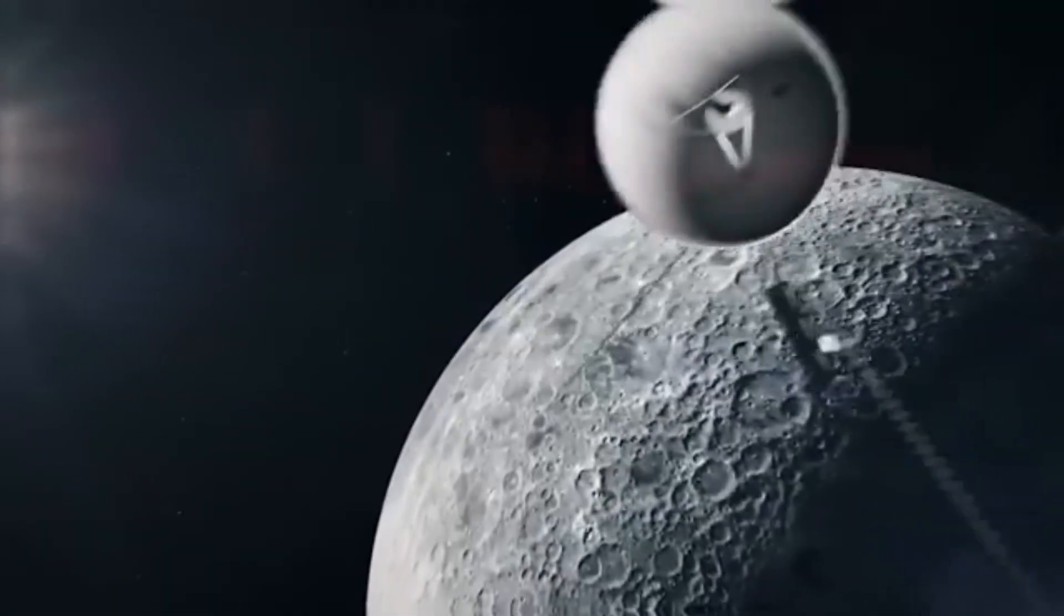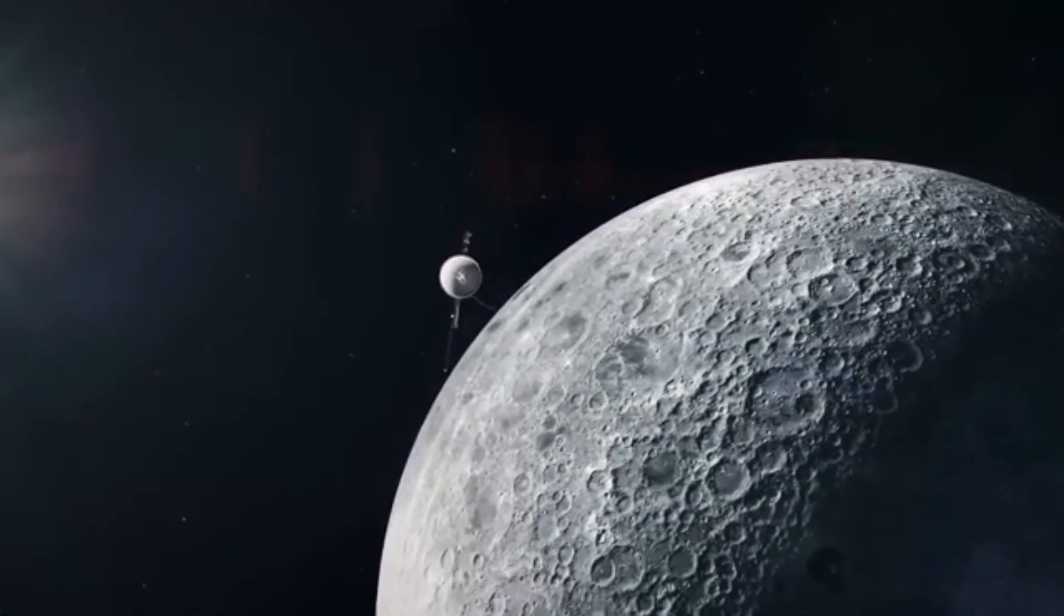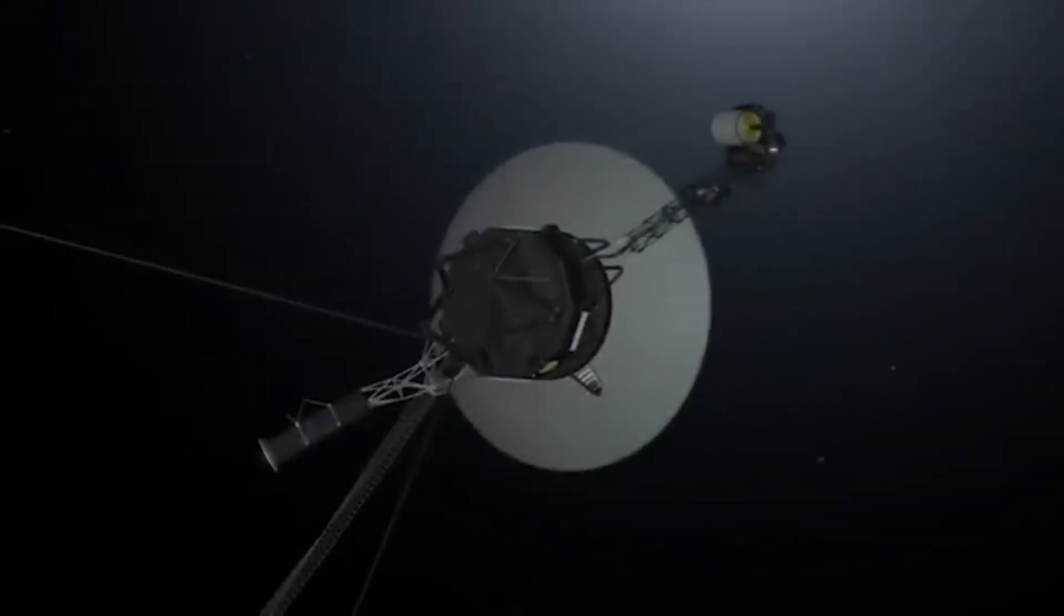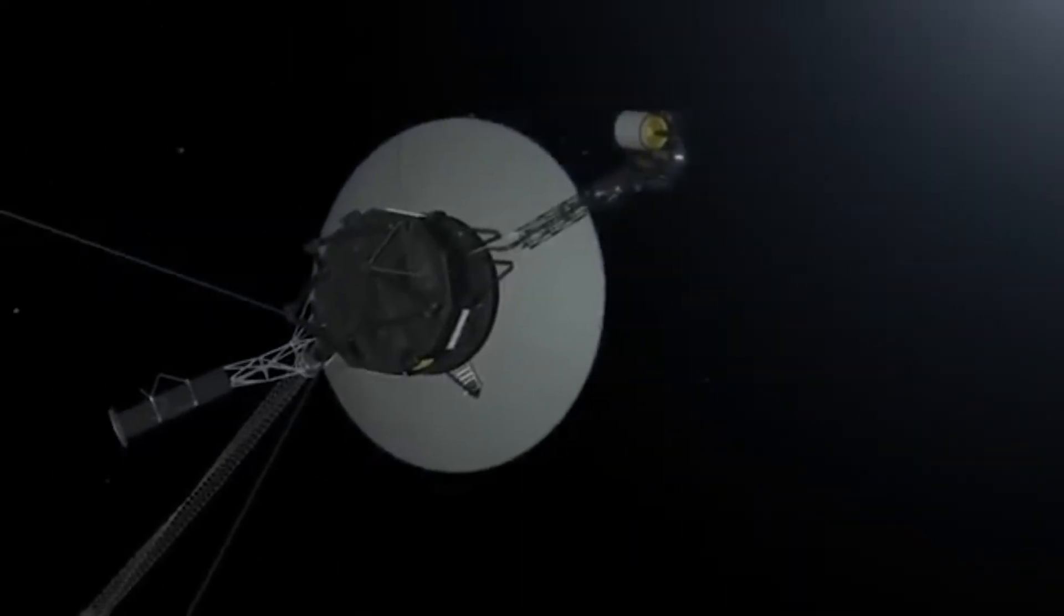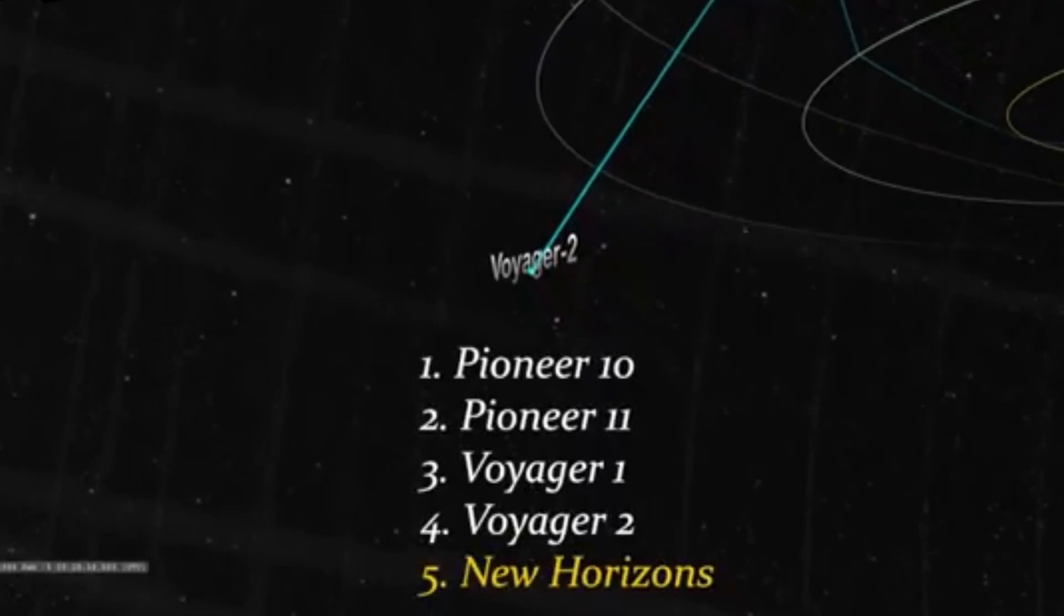Despite the transmitter's low power output, researchers calculated that we could continue detecting Voyager's signal out to approximately 0.97 light years, or about 354 light days.